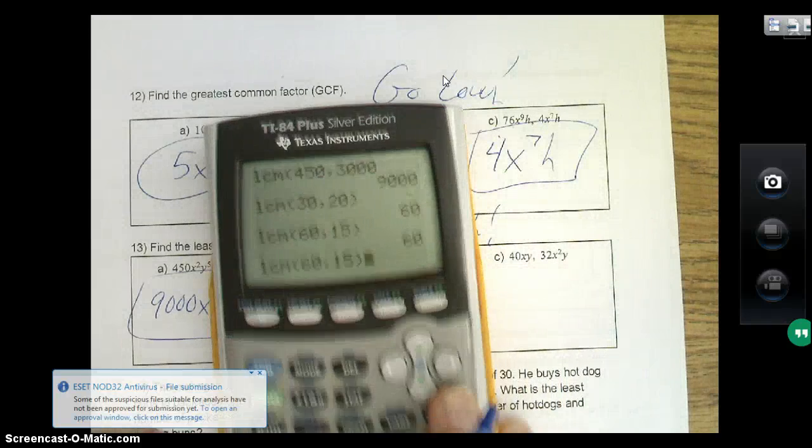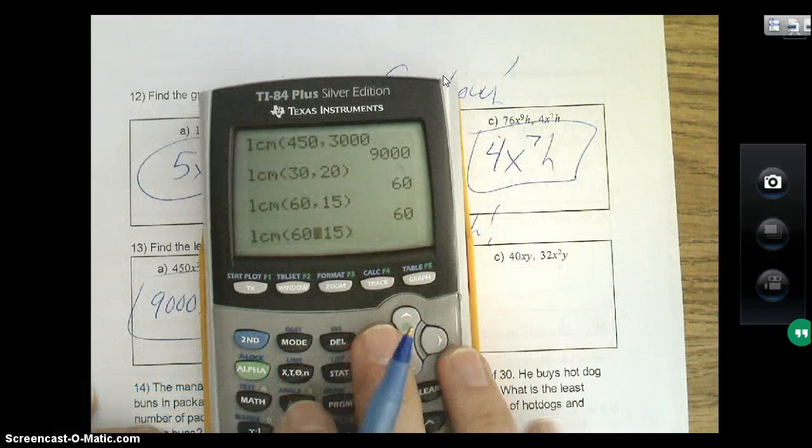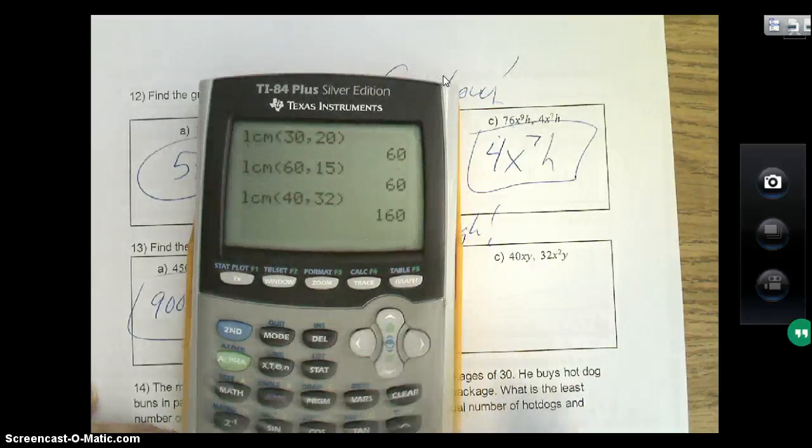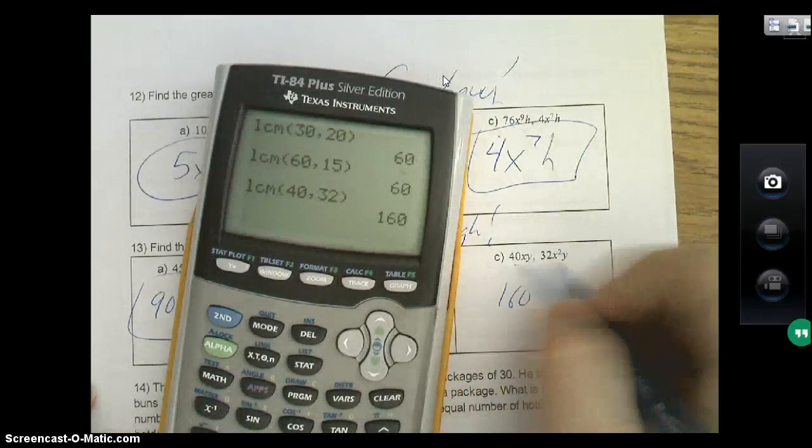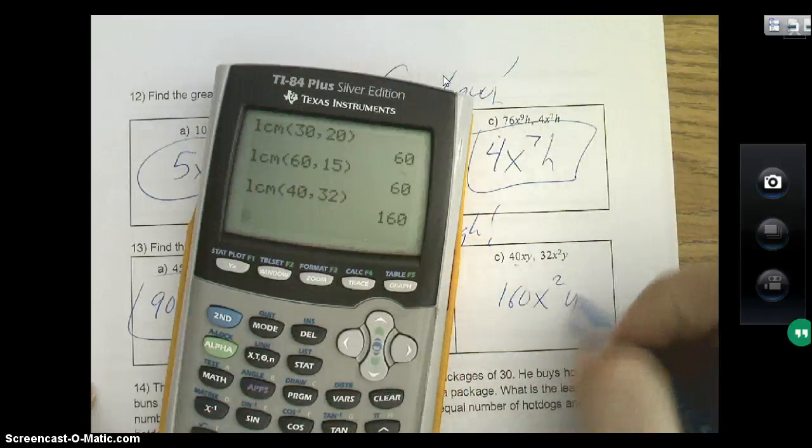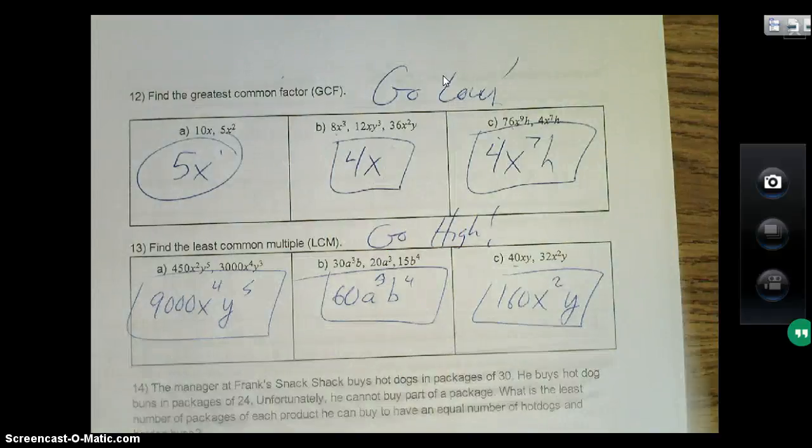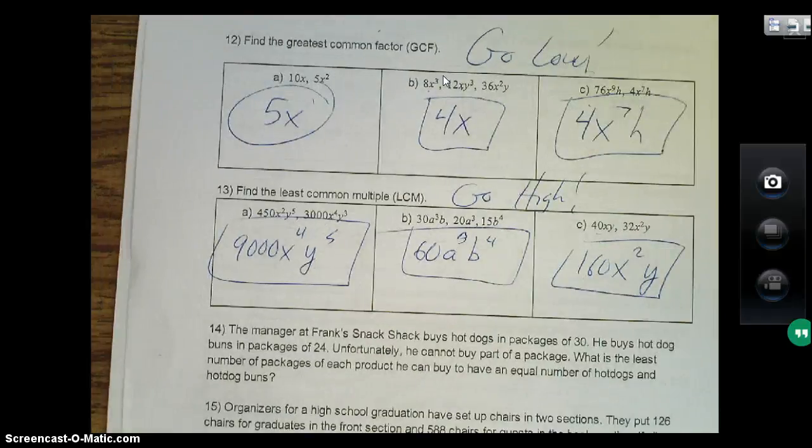a³, a³, nothing—the highest is a³. b, nothing, b to the fourth—the highest is b to the fourth. Good, good, cool cool. All right, very last one then, LCM. We've got 40 and 32, so 160. High between x and x² is x². High between y and y is y. All right, awesome. Stay tuned for the next video, we'll keep going with this. Hopefully this will help a little bit, and good luck, we are all counting on you.